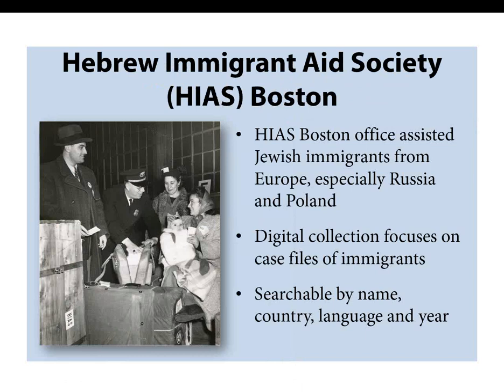The Hebrew Immigrant Aid Society in Boston was established in 1904. The organization ensured that Jewish immigrants had access to holiday and religious services and kosher food, provided shelter and social services, and assisted immigrants with finding employment and schools. During World War II, HIAS arranged for sponsors and worked continuously to help the many Jews who wrote to them for help, but immigration quotas made it extremely difficult for them to assist. The digital collection focuses on the case files for each immigrant and their family who received assistance through the HIAS Boston office. The collection is searchable by name, country, language, and year. New case files are added to the DLA on a monthly basis.